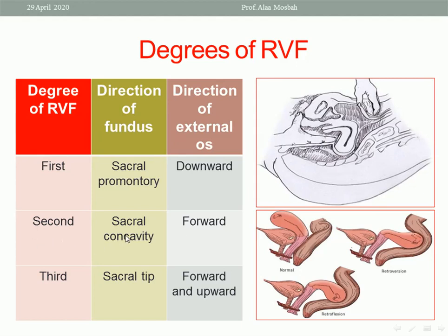What about the third degree? The fundus is directed toward the tip of the sacrum, and the external os will be directed forward and upward. Please look at this table showing the degrees of RVF — first, second, and third — and the corresponding direction of the fundus and the direction of the external os.